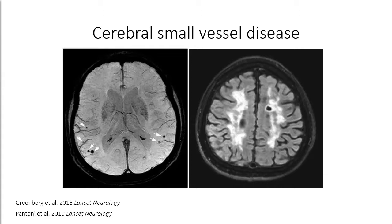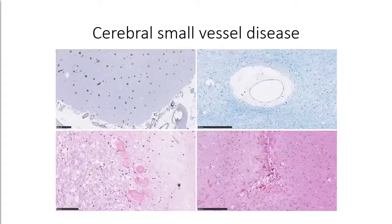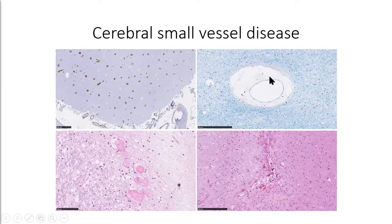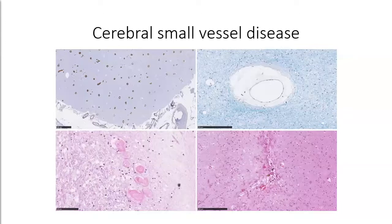But when you look under the microscope — when you ask a neuropathologist what small vessel disease is — they would show very different pictures. Here are examples of actual disease of the small vessels in the brain: cerebral amyloid angiopathy, where the protein amyloid accumulates in the walls of cortical vessels, leading to stiff vessels and reduced vessel function; a vessel in the white matter with an enlarged perivascular space; vessels affected by hypertension with thick vessel walls and hyalinosis; and a cortical microinfarct. It becomes immediately clear that this is not what we pick up with MRI — there's a big discrepancy between what we call manifestations of small vessel disease on MRI versus what is considered small vessel disease at the pathological level.